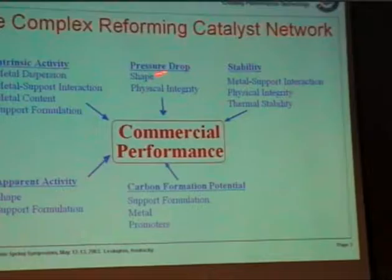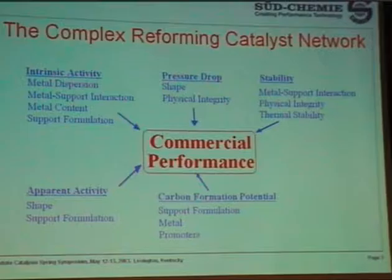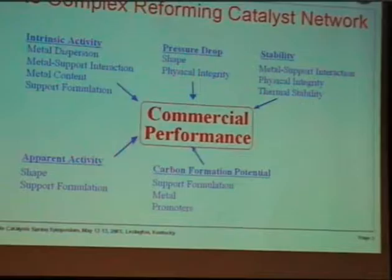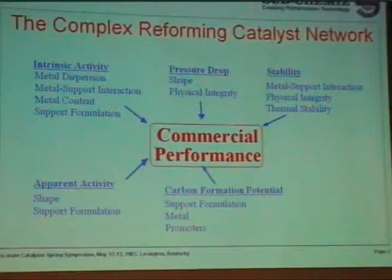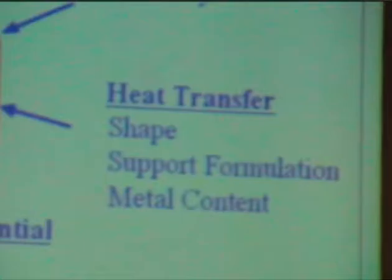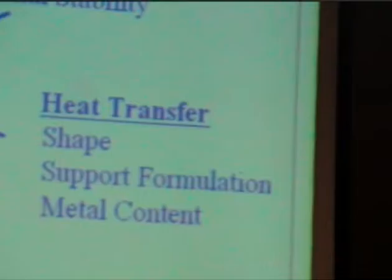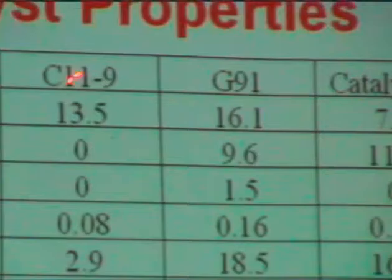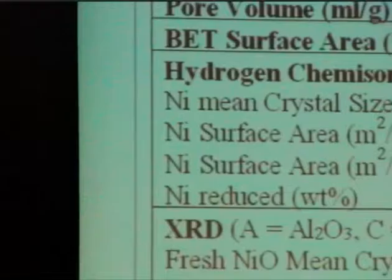Pressure drop is achieved by designing the shape, and you want as much geometric surface area as possible, but you also need to pay attention to physical integrity. Heat transfer has more to do with the process and reactor design, but the catalyst shape and formulation do have something to do with the heat transfer of the whole process. We focus on four catalysts here. The alpha-alumina is a conventional steam reforming catalyst — an alumina-based support that has been treated at very high temperature and is already very stable.